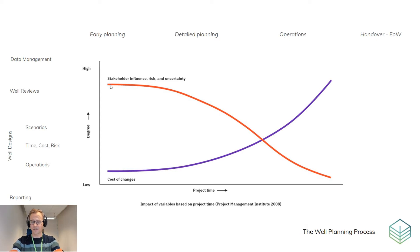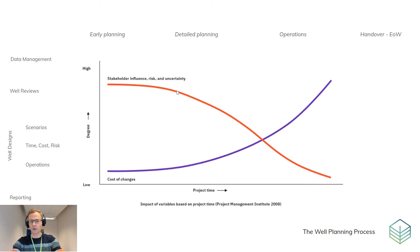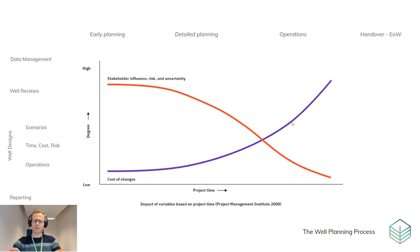If you sanction a well at this level, you carry great uncertainty of what is going to be done. Following the red line to the right, you are making more decisions and the uncertainty is being reduced. As you can see, the cost of change is increasing. You have already locked in some major decisions and going back on these will come at a penalty.